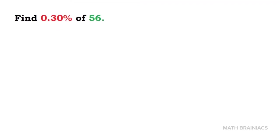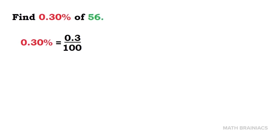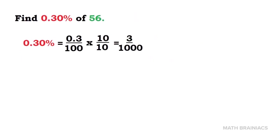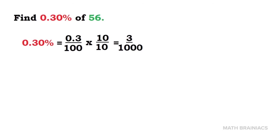Let us work on another example so that you can fully understand the lesson. Find 0.3% of 56. 0.3% into fraction is 0.3 over 100. We are going to eliminate the decimal point on the numerator. Therefore, we're going to multiply the fraction by 10 over 10.